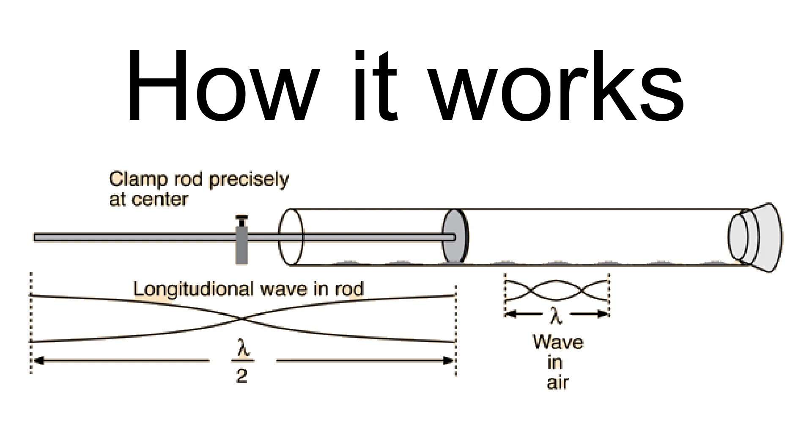By measuring the distance between the piles, the wavelength lambda of the sound in air can be found. If the frequency f of the sound is known, multiplying it by the wavelength gives the speed of sound c in air: c equals lambda f.